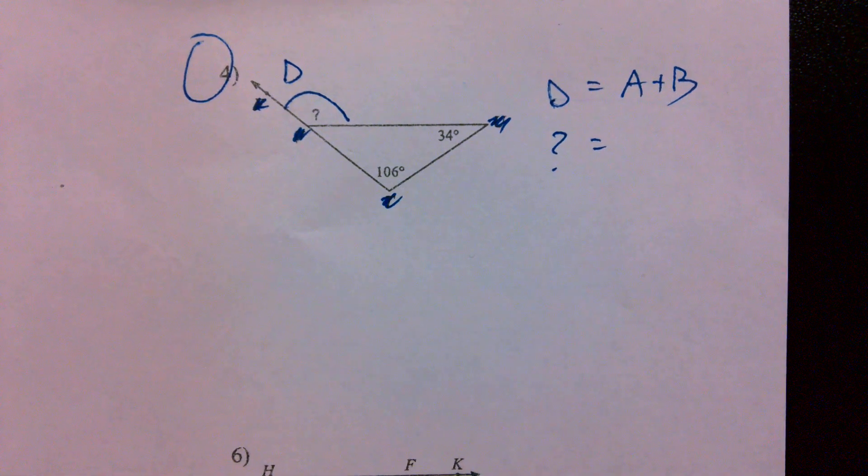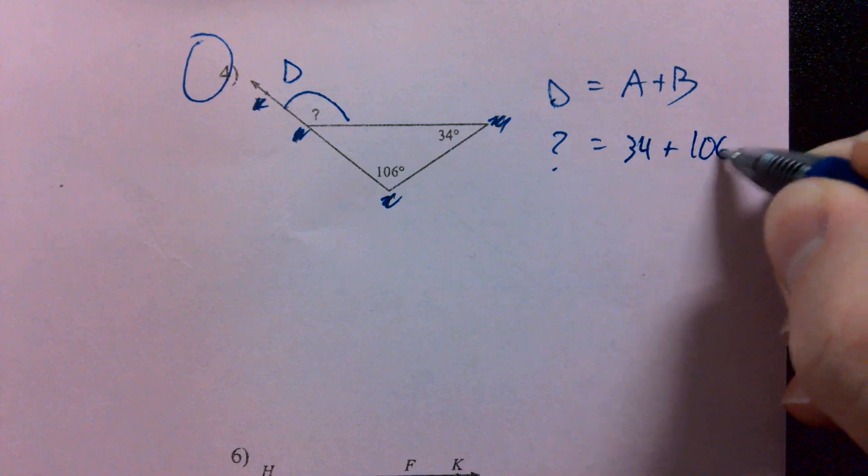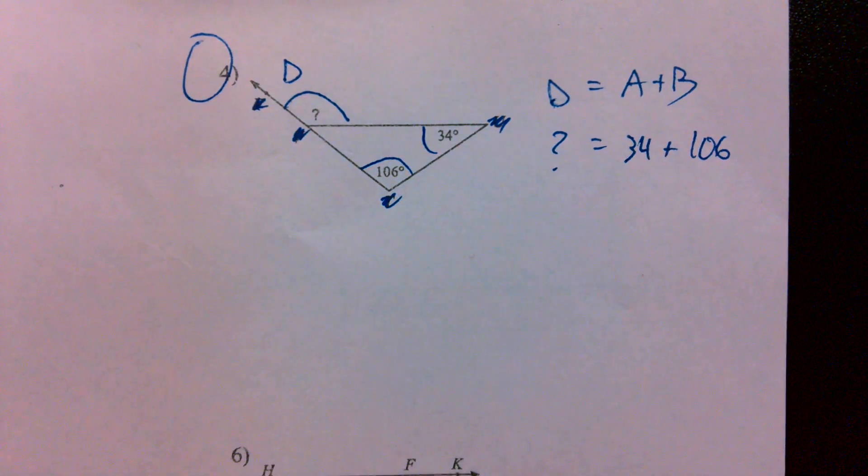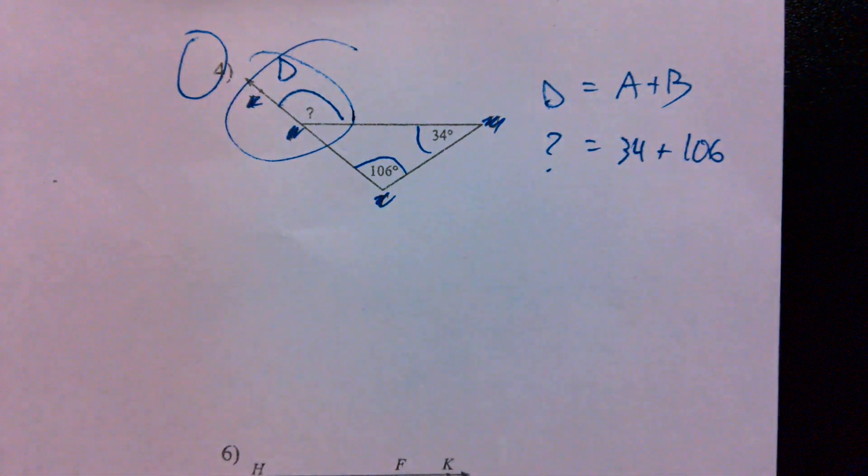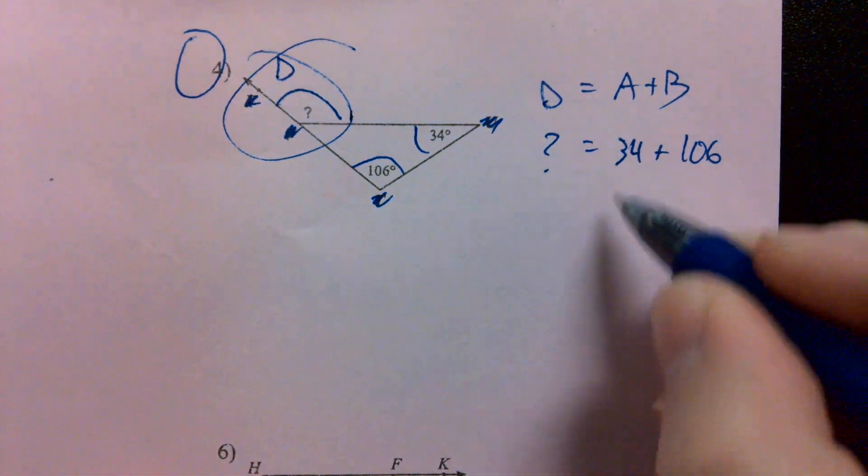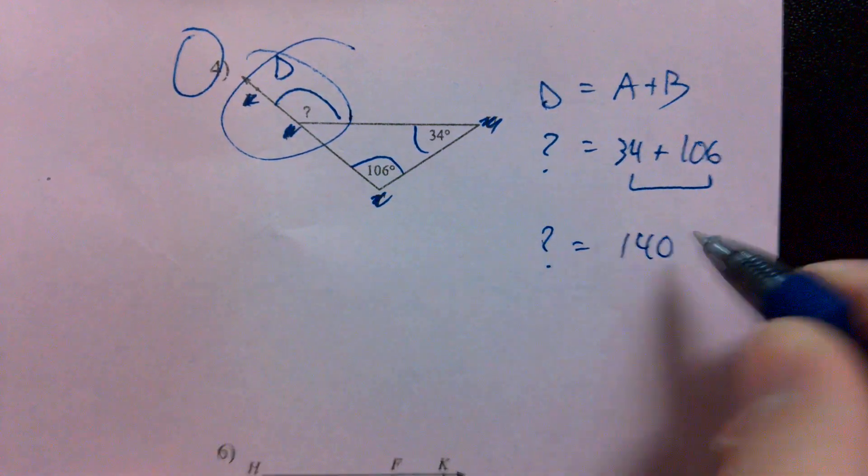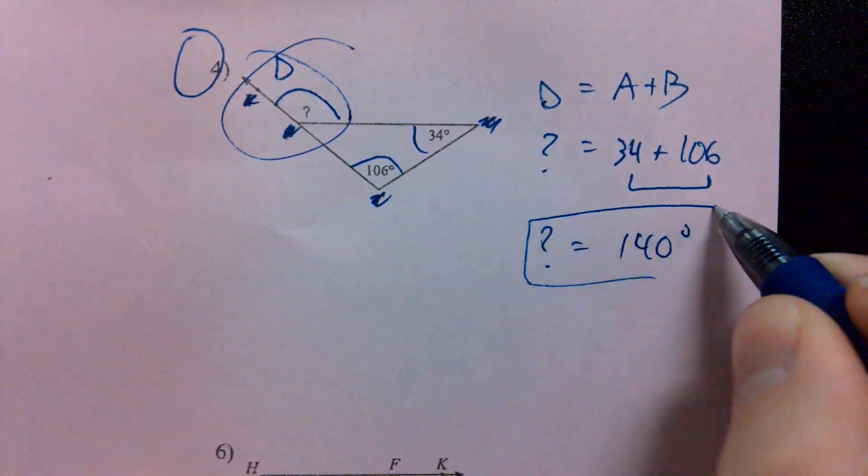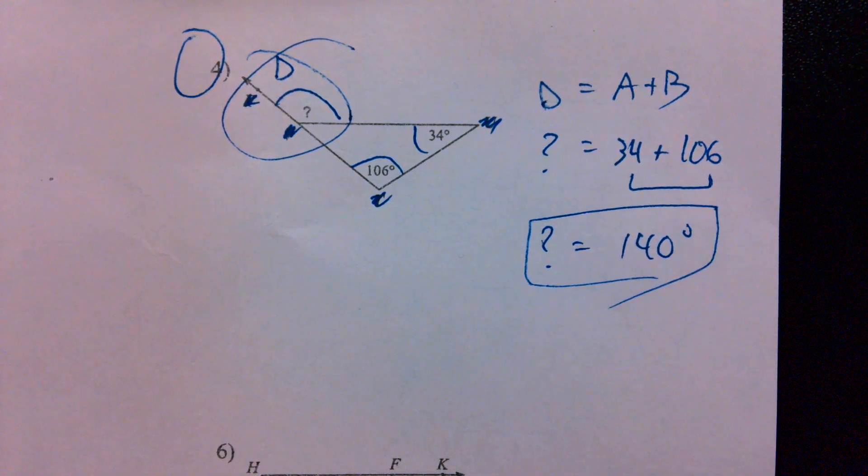What's my A? What's my B? 34 and 106. Those are my remote interior angles. Remember, remote meaning far away from angle D. What's 34 plus 106? 140 what? Degrees. Just like that.